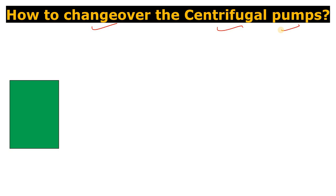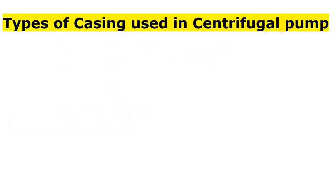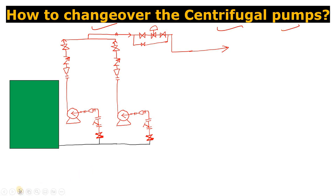In this video we are going to discuss how to do the changeover of a centrifugal pump — this is a very important video. Let's look at a circuit diagram I have made here. We have two pumps: A and A1. In normal operation, both pumps may be running, or one pump is running and one is on standby. The procedure we'll cover is stopping the running pump and starting the standby one.